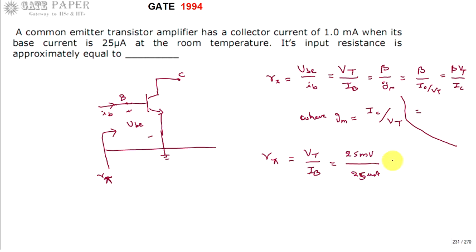25 and 25 get cancelled. Milli is 10 power minus 3. Micro is 10 power minus 6. 10 power minus 6 if it goes upwards becomes 10 power plus 6. So you are going to be getting the answer is 1 kilo ohm. This is the simplest equation to use.